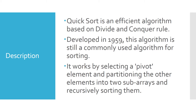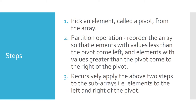Quicksort works by selecting a pivot element and partitioning the other elements into two sub-arrays, then recursively sorting them. There are three steps: first, picking a pivot element from the array; second, the partition operation, which reorders the array so elements less than the pivot go to the left and elements greater go to the right; and finally, recursive operation is applied on both sub-arrays.